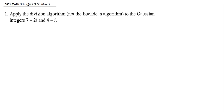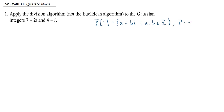Our first problem, we are looking at using the division algorithm for two Gaussian integers. A quick reminder that Gaussian integers are elements of the set Z adjoined i. These are all things of the form A plus Bi, where A and B are integers, and i satisfies the property that when you square it, you get negative 1.